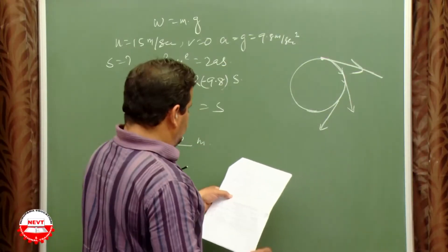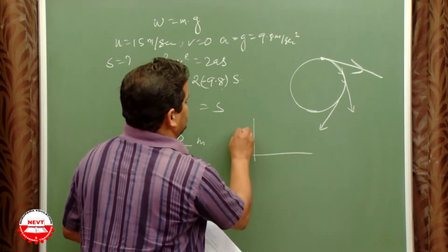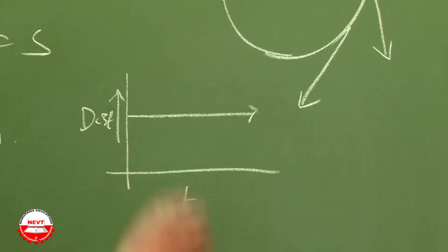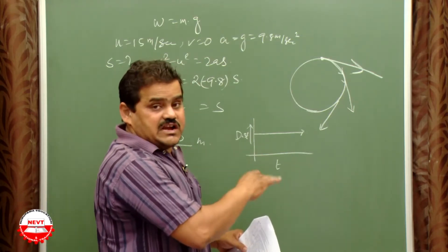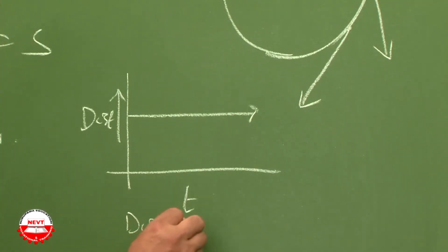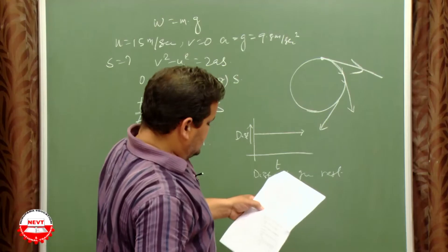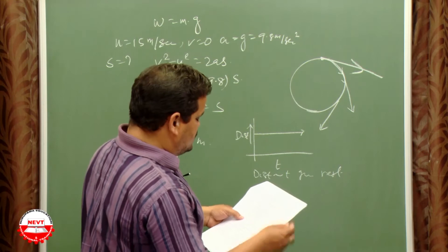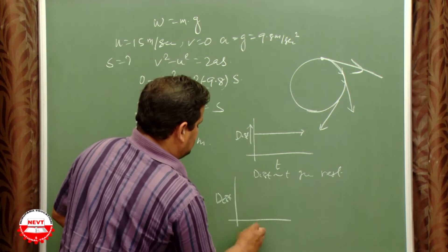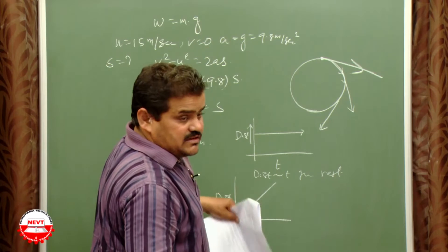Second part: draw distance-time graphs for the following situations. When the body is stationary: the graph is a horizontal straight line (distance does not change with time). When the body moves with uniform speed: the graph is a straight line with positive slope (distance increases uniformly with time).